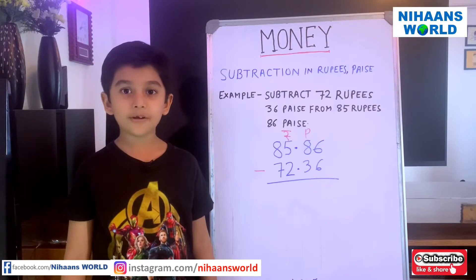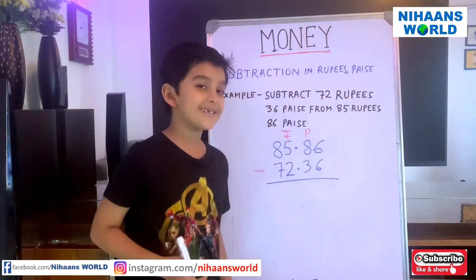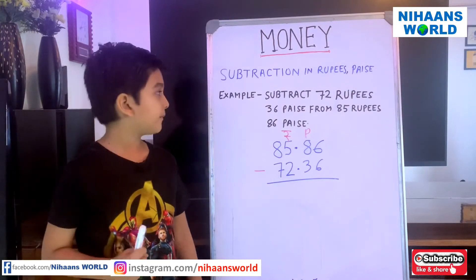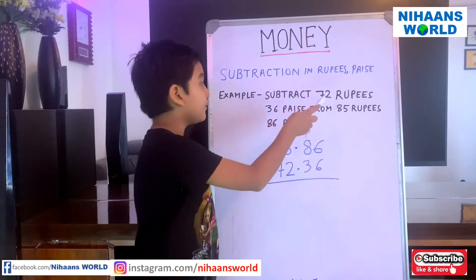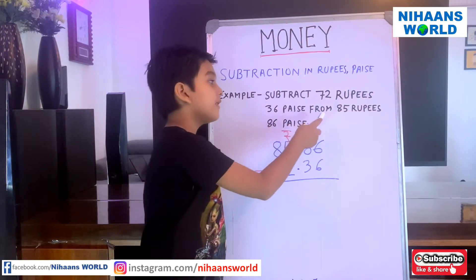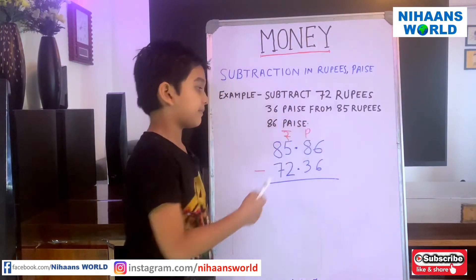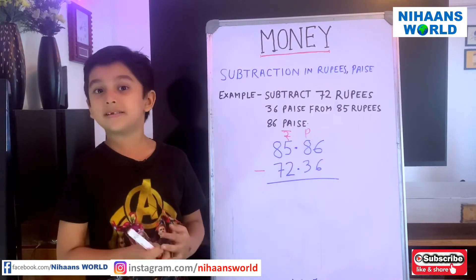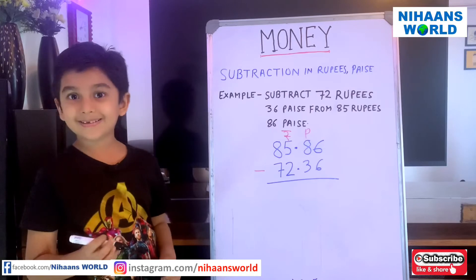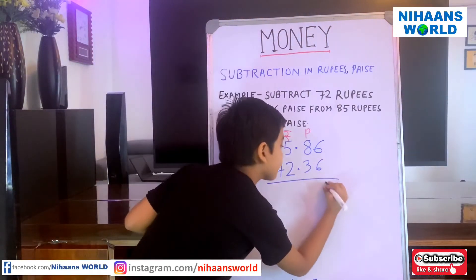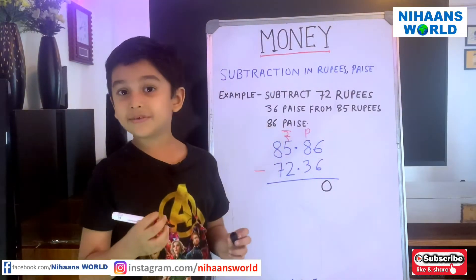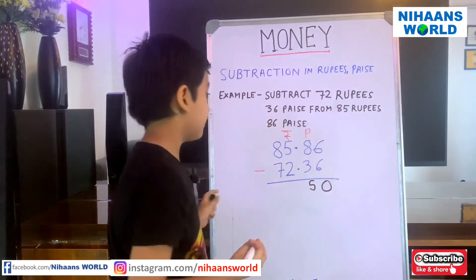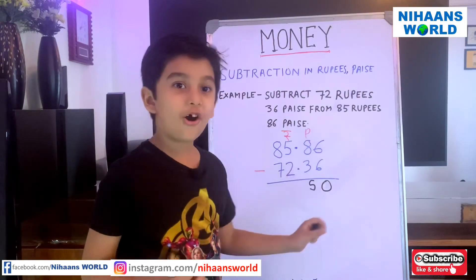Friends, now we are going to learn subtraction in rupees and paise. Let us do one example. Subtract 72 rupees 36 paise from 85 rupees 86 paise. Here we wrote it. So, what is 6 minus 6? 6 minus 6 is 0, so we write 0 here. And 8 minus 3 is 5, so we write 5 here. And in the dot column, we write dot.